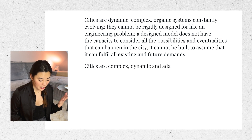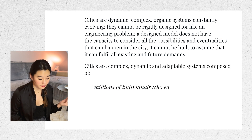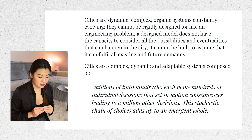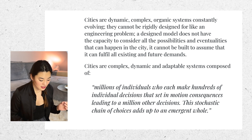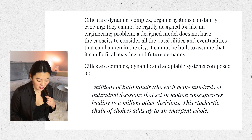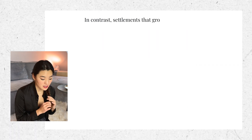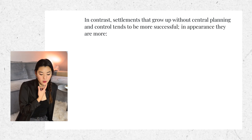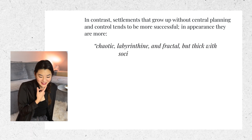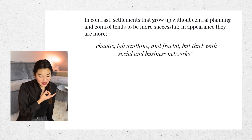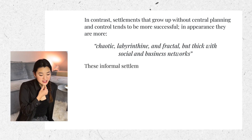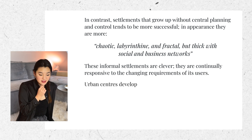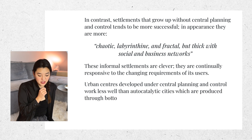Cities are complex, dynamic, and adaptable systems composed of millions of individuals who each make hundreds of individual decisions that set in motion consequences leading to a million other decisions. This stochastic chain of choices adds up to an emergent whole. In contrast, settlements that grow up without central planning and control tend to be more successful. In appearance they are more chaotic, labyrinthian, and fractal, but thick with social and business networks — these informal settlements are clever and continually responsive to the changing requirements of their users.